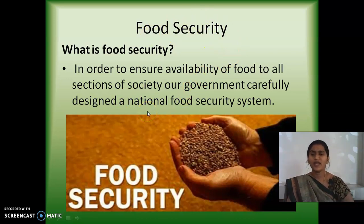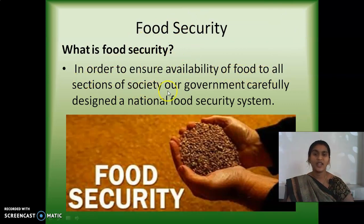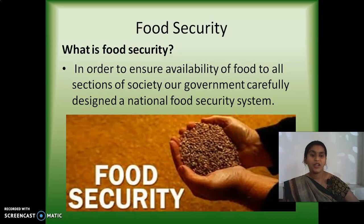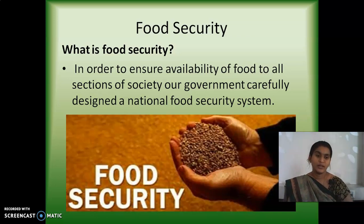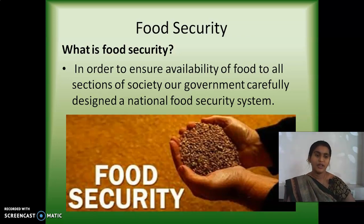What do you mean by food security? In order to ensure availability of food to all sections of society, our government carefully designed a national food security system. For all the population and all sections of people within the country, everyone has to get proper food. To make sure or to ensure that everyone will get food — that is the reason they started with the food security system in India.